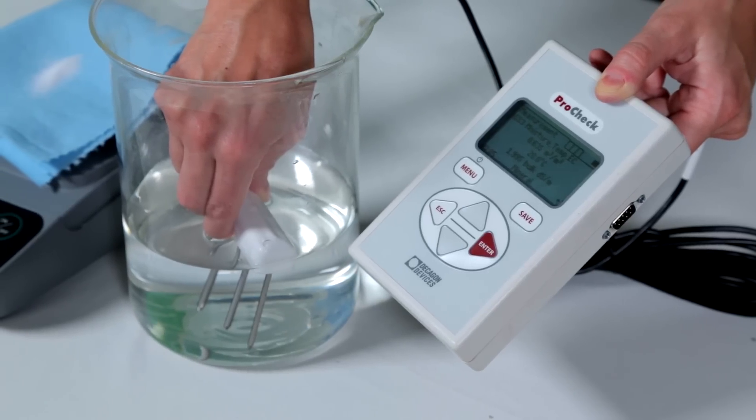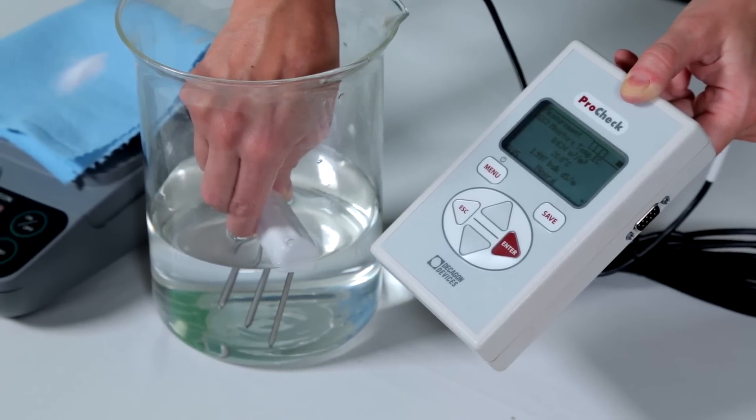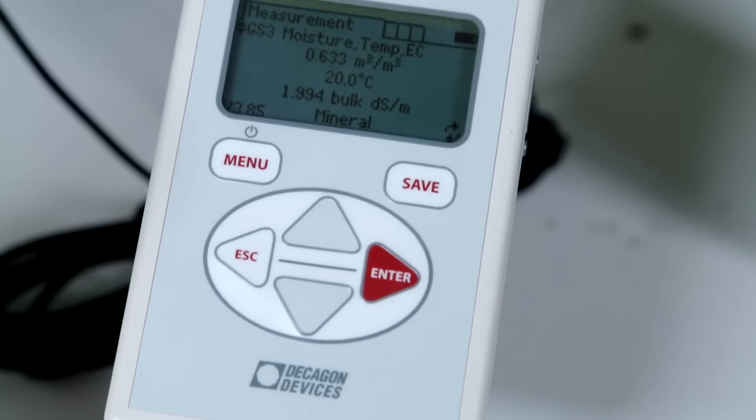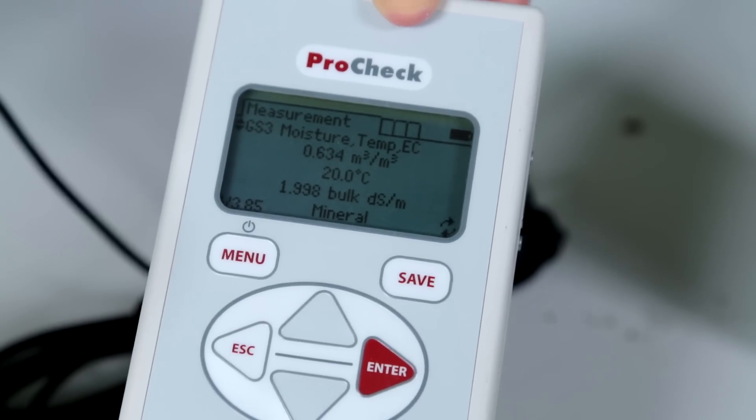Now we take one of our sensors, in this case the GS3, and hook it up to a ProCheck, and we put that into the water to measure the EC. We're reading 1.9 deci-siemens per meter.